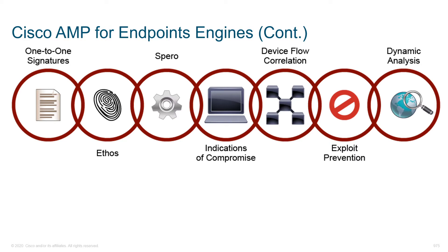The next thing we can leverage is called Ethos, sometimes referred to as fuzzy fingerprinting. Instead of using a checksum that looks at all of the code, we look at the application itself — the way it behaves. Does it do things that are suspicious? Is it using packers or unpackers? Does it use encoders? Are there chunks of code that are encrypted? Is it behaving funny? We don't have a perfect signature, but we're looking at behavior for something potentially bad.